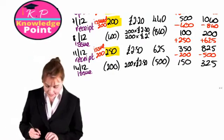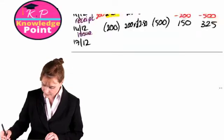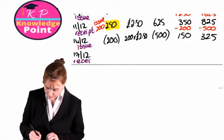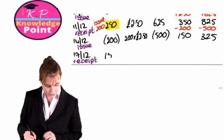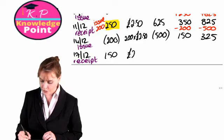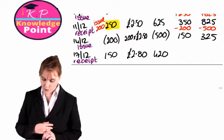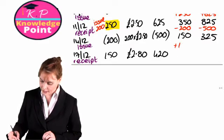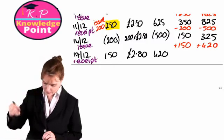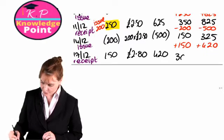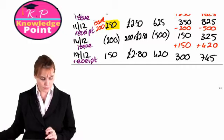Our next event is a receipt on the 17th of December. We purchased 150 units with a unit value of £2.80, giving a total value of £420. Adding that on, we now have 300 units with a total value of £745.